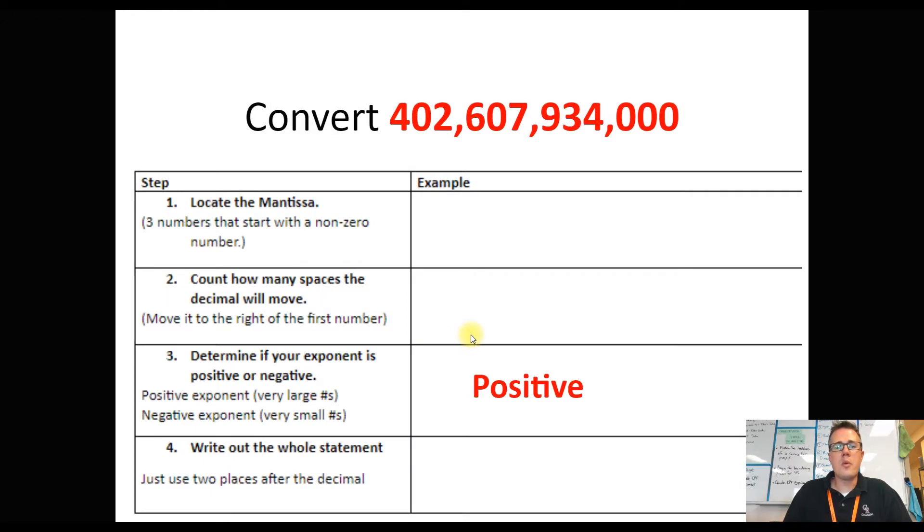So we're going to start with a really big number, 402,607,000,000. It's a really big number. Because this number is kind of unruly, it makes sense to put it into scientific notation to deal with it better.